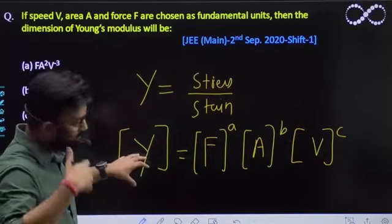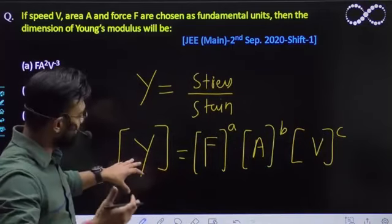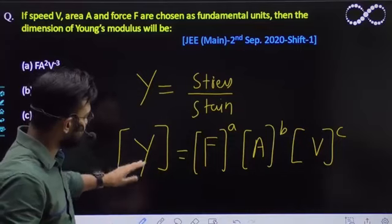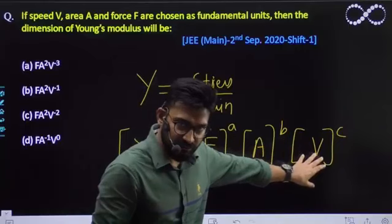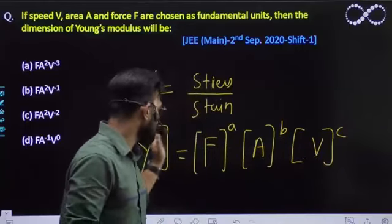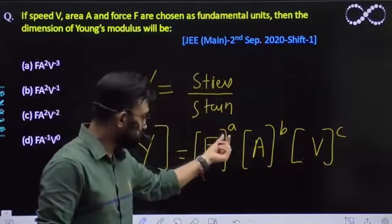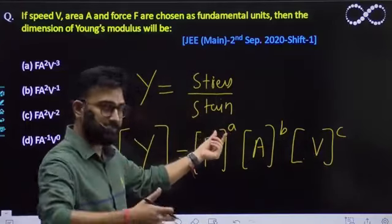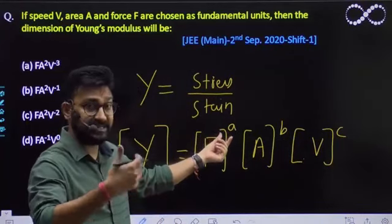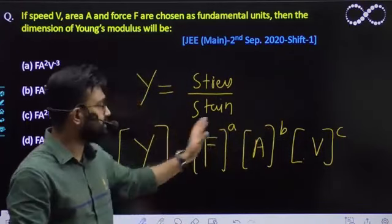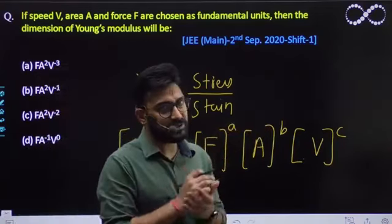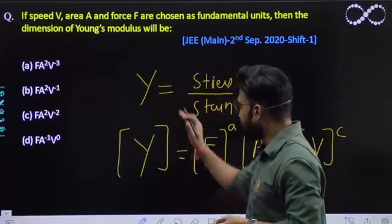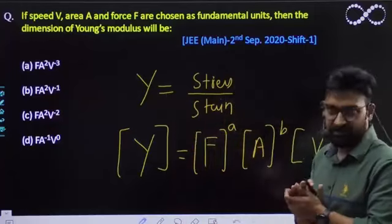Toh iska simple equation form karke bhi aap asaani se nikaal sakte hain - like ki Young's modulus ka dimension likha, phir force ka dimension likha, phir area ka dimension likha, phir velocity ka dimension likha. Aur dono mein phir jo mass and length and time ke units ko comparison karke A, B, C aap asaani se find out kar sakte hain. Woh thoda sa lamba process hoga. Usse better process aap is formula mein hi seedha direct derive kar sakte hain.